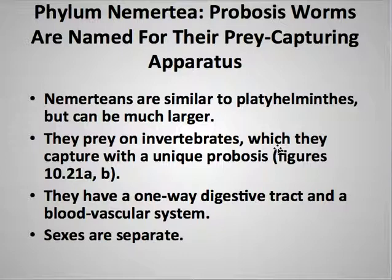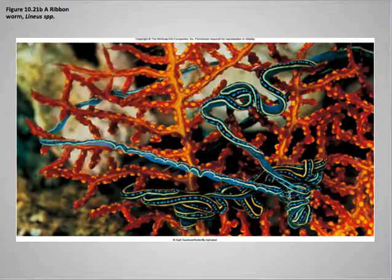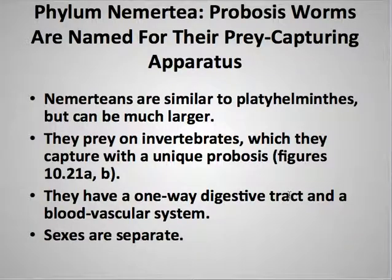Another phylum — the nemerteans — are similar to the platyhelminthes, so similar to the flatworms, but they can be much larger. They eat invertebrates, which they capture using a proboscis, though we can't really see it here. They have a one-way digestive tract and a blood vascular system, and the sexes are separate. It's a very small group and there's not much else unique to say about them.